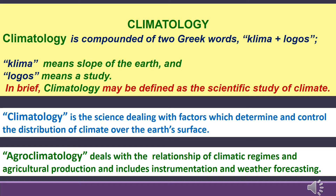This slide is about climatology. Climatology is compounded of two Greek words — 'klima' plus 'logos', where klima means slope of earth and logos means a study. Climatology may be defined as the scientific study of climate — the science dealing with factors which determine and control the distribution of climate over the earth's surface. Agroclimatology deals with the relationship of climatic regimes and agricultural production, and includes instrumentation and weather forecasting.